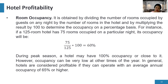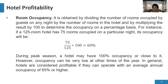Now, hotel profitability. There are different formulas for measuring hotel profitability. The first is room occupancy, obtained by dividing the number of rooms occupied by guests on any night by the total number of rooms in the hotel, then multiplying by 100. For instance, a 125-room hotel with 75 rooms occupied has an occupancy of 75 ÷ 125 × 100 = 60%.